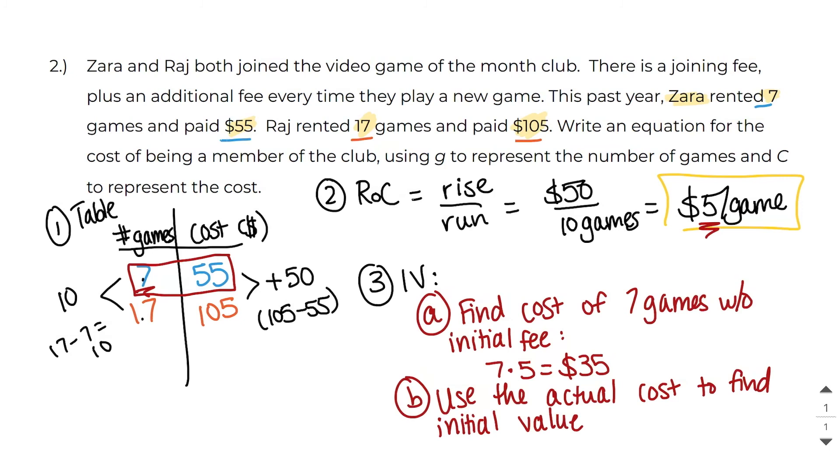Now I need to use the actual cost to find the initial value and the actual cost is $55. So it's $55 with the initial value, but it's $35 without it. So we would have to subtract these two values. And we would find out that it's $20 as our initial value. So now we have our rate of change and we also have our initial value. So we can go ahead and write our equation. And so we can say the cost to be a member is $5 per game plus an initial $20 fee.